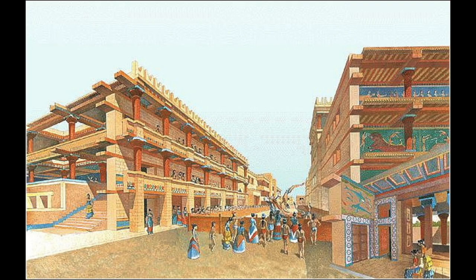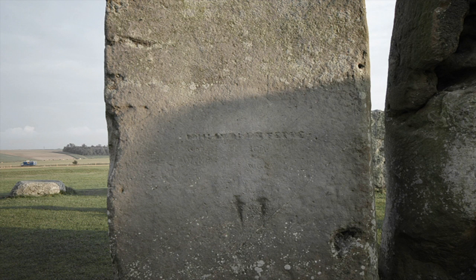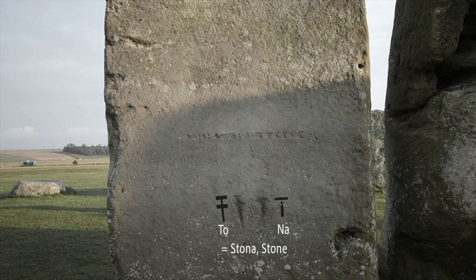Those were most likely the Minoans. These syllables, if translated under the glyphic symbols of the Linear A, read as 'to Na' which translates in ancient Greek as 'Stone'.